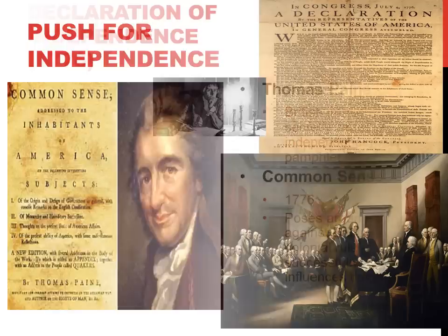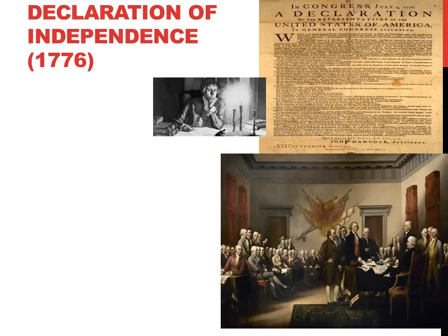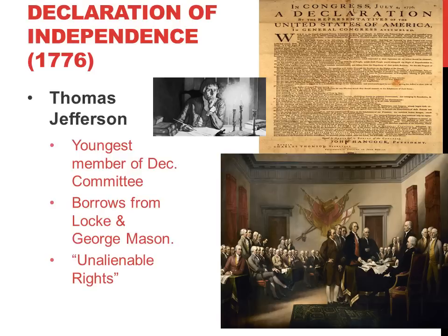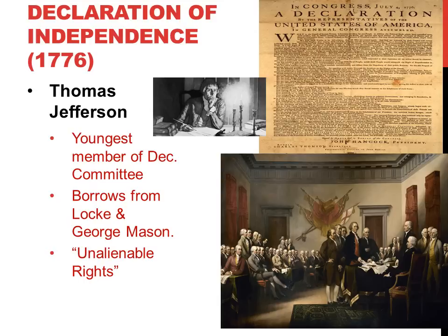Meeting privately — as their acts would be considered treasonous — a declaration committee was formed from the Continental Congress of five men, tasked with putting together a protest document. Thomas Jefferson, the group's youngest member, was given the task of writing this document. In his now famous writings, Jefferson quotes thinkers such as John Locke and George Mason, using terms like unalienable rights to declare what he believed the colonists deserved in their independence from the British crown.